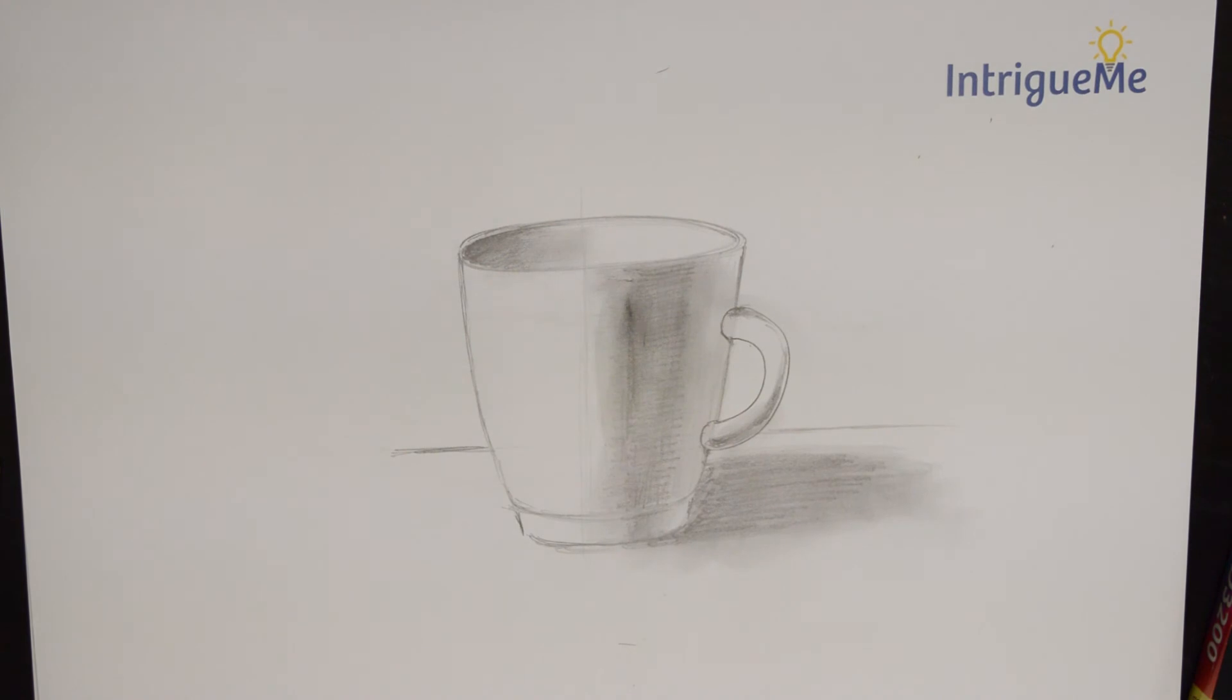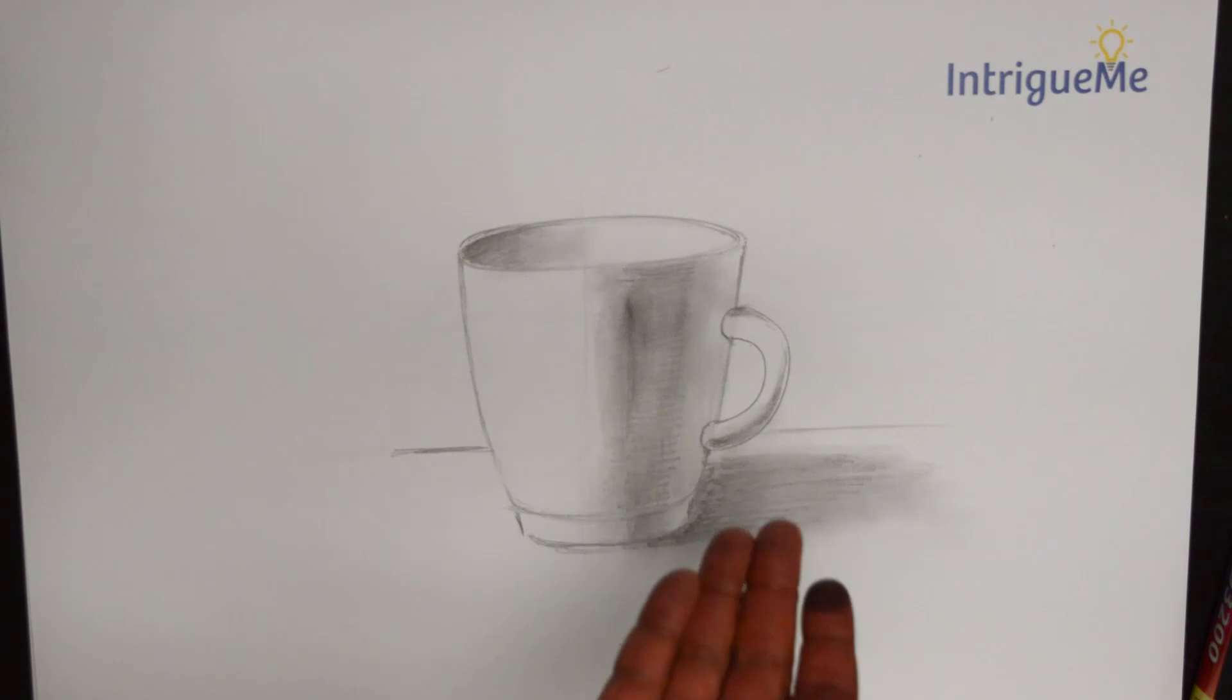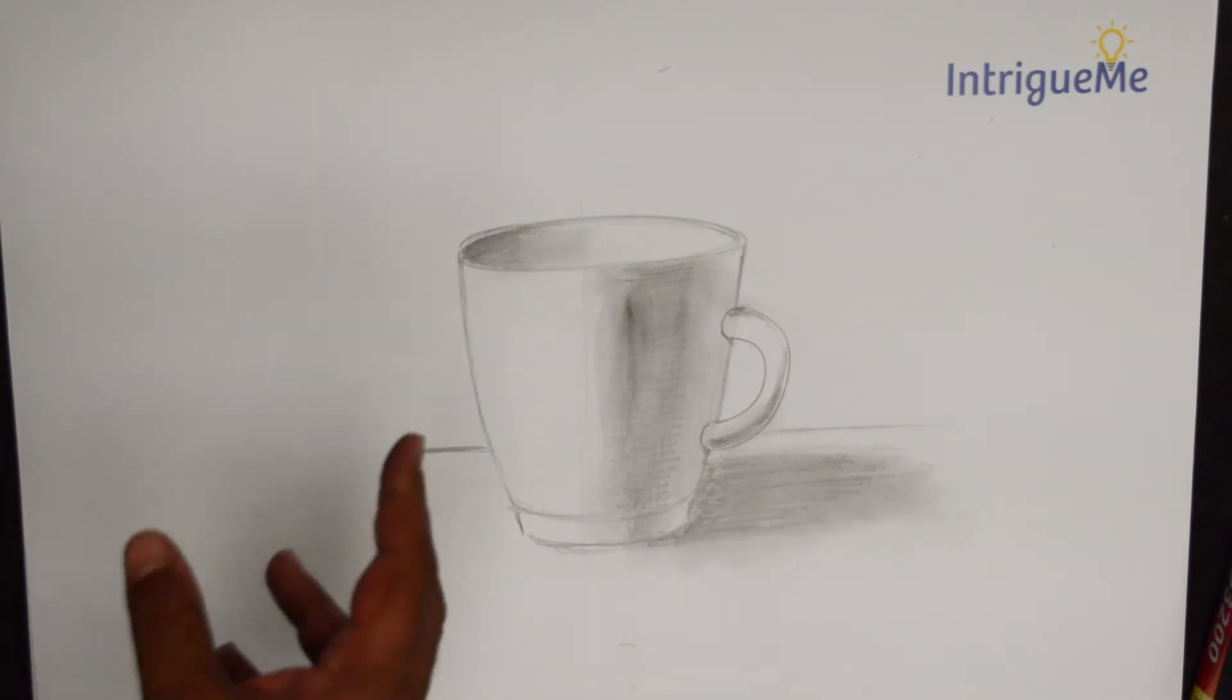So that's a quick exercise in drawing a quick mug in a light source using either vertical or horizontal crosshatch, or even both.